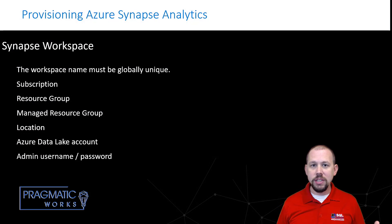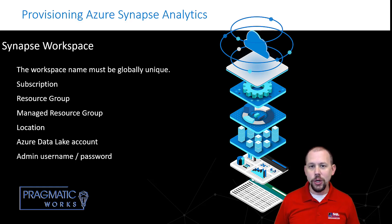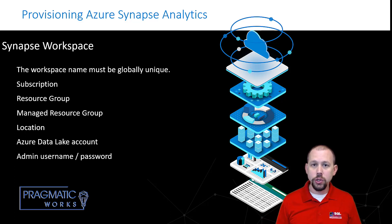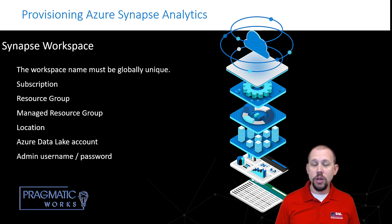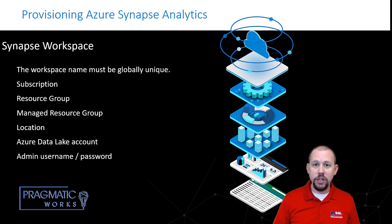We're also going to provision our Azure Synapse Analytics workspace. There are a couple of requirements. First, the name must be globally unique across all of Azure. The reason for that is because the name of your Azure Synapse Analytics workspace is actually the name of the logical server that gets created. When we provision ASA, a lot of things happen in the background — one of those is that it creates a SQL logical server. We use that server name to connect to our dedicated pools and to our serverless pool.